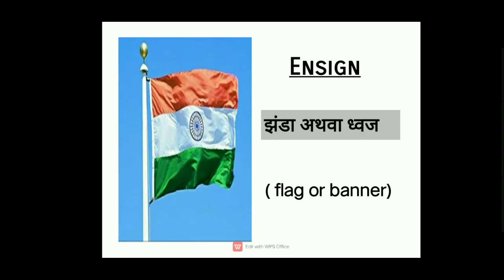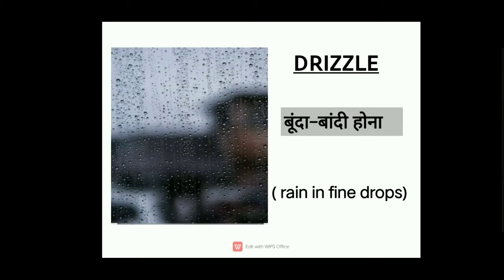Next word is ensign. Ensign means jhanda, adwa, dhaj — you can see a flag or banner. We call it ensign.